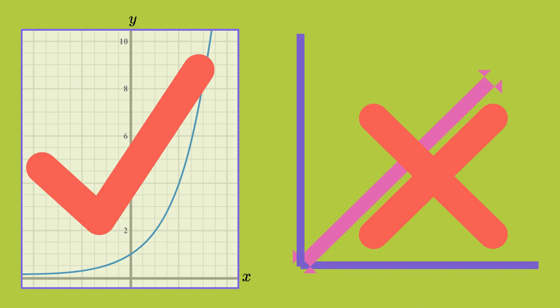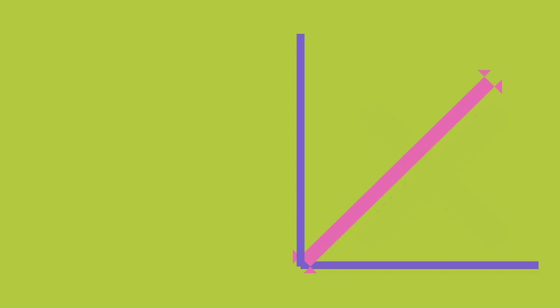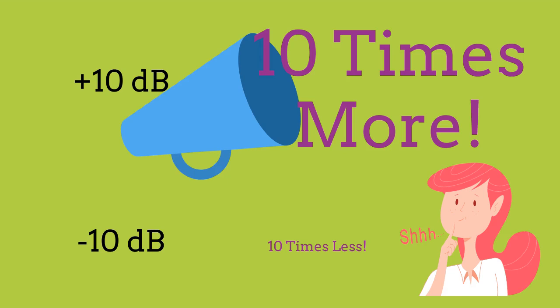Since the dB scale is a logarithmic measure, it produces simple numbers for large scale variations in signals. It is very useful because system gains and losses can be calculated by using simple addition and subtraction. Every time you double or halve the power level, you add or subtract 3 dB to the power level. This corresponds to a 50% gain or reduction. A 10 dB gain or loss corresponds to a 10-fold increase or decrease in signal level. A 20 dB gain or loss corresponds to a 100-fold increase or decrease in signal level.